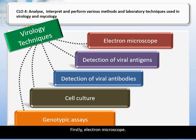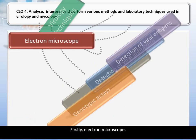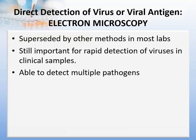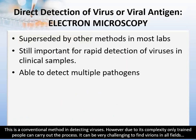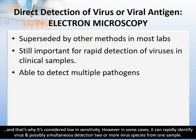Firstly, electron microscopy. This is a conventional method in detecting virus. However, due to its complexity, only trained people can carry out the process. It can be very challenging to find virions in all fields, and that is why it is considered low in sensitivity. However, in some cases it can rapidly identify virus and possibly allow simultaneous detection of two or more virus species from one sample.